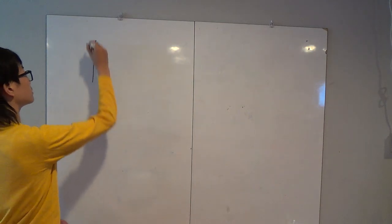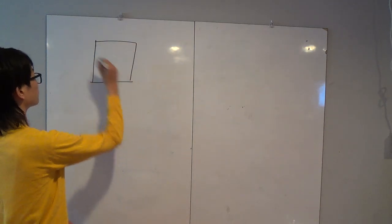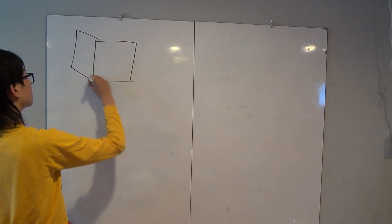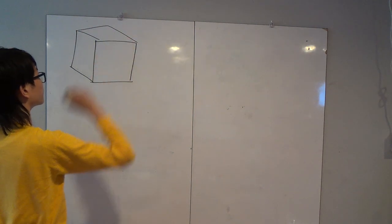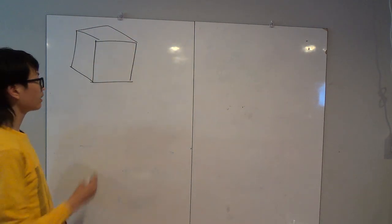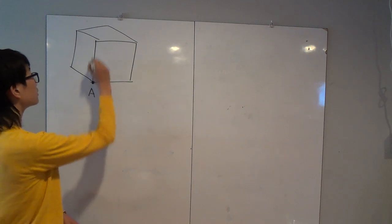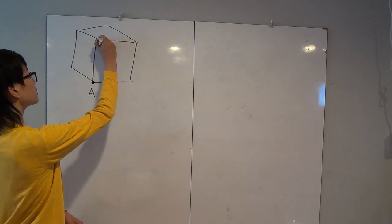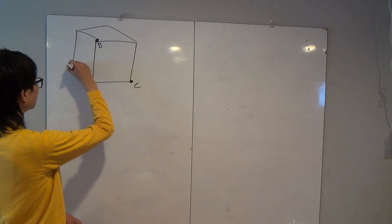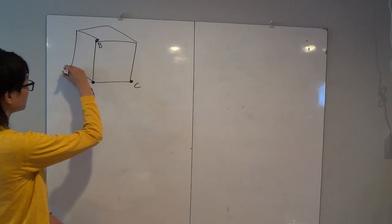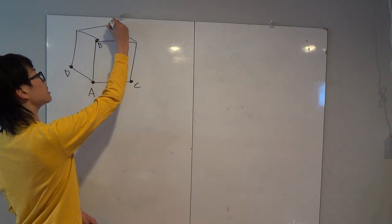We're given that there is some cube with an unknown side length, and the points on the cube are named A, B, C, D, and E.